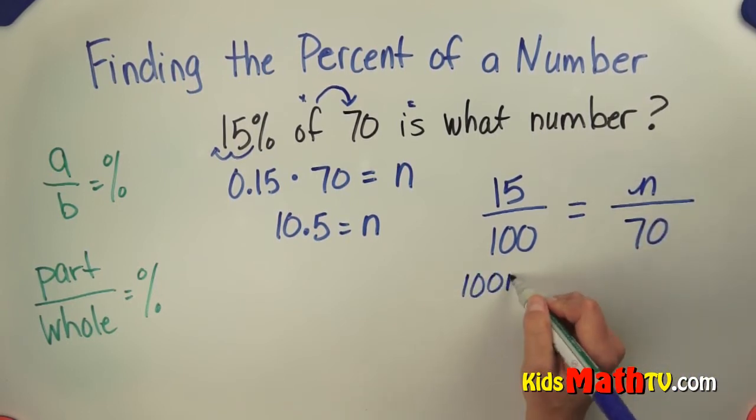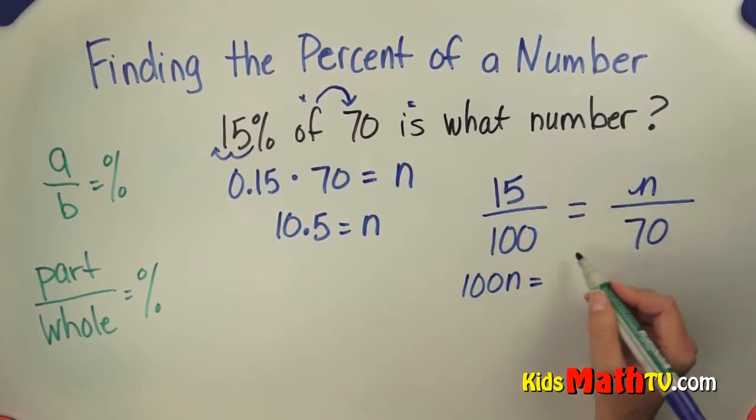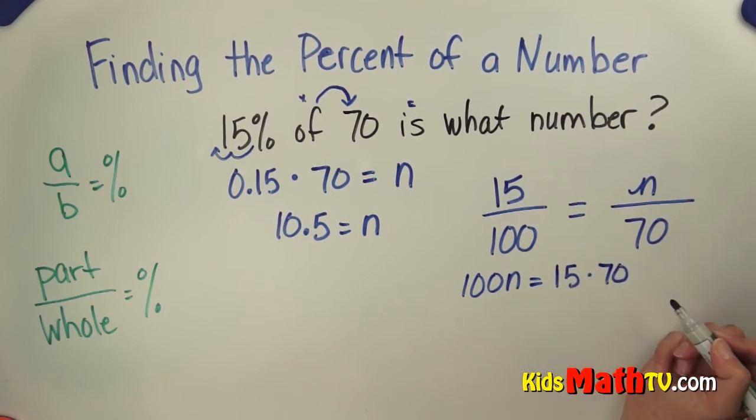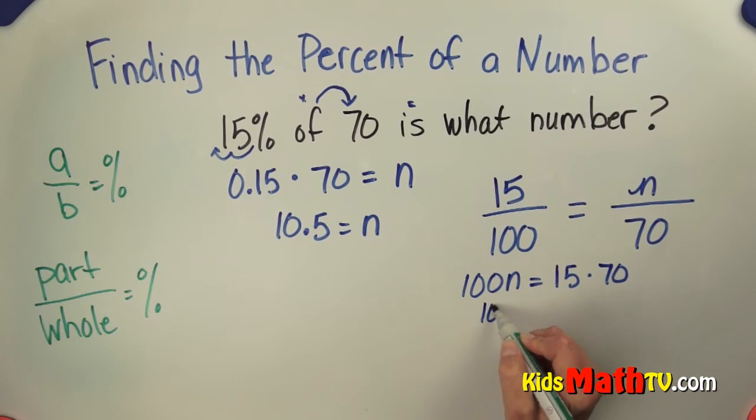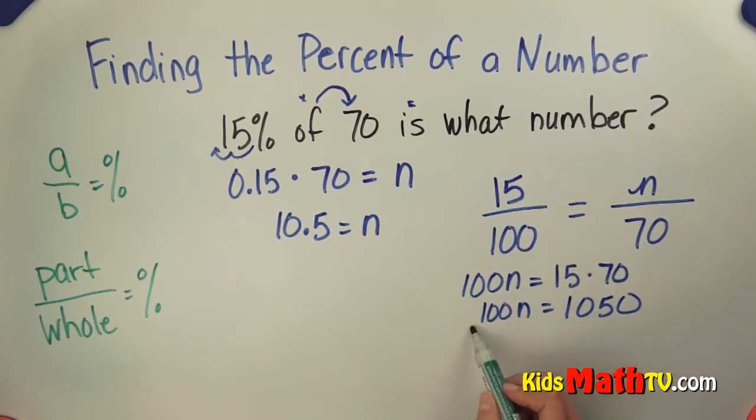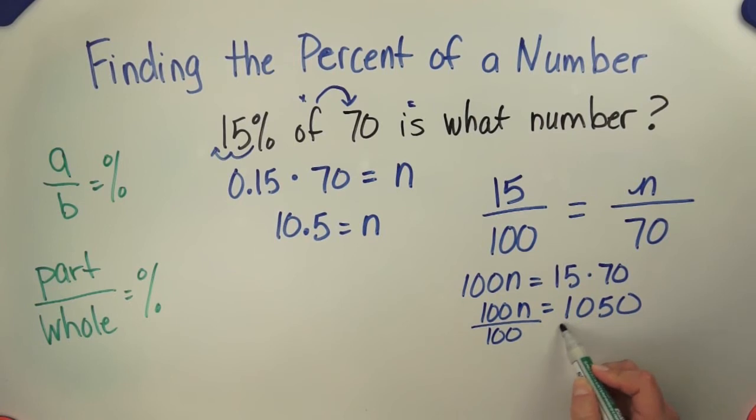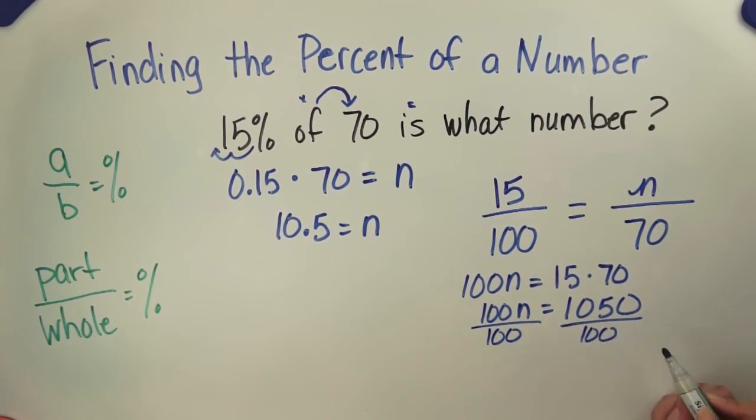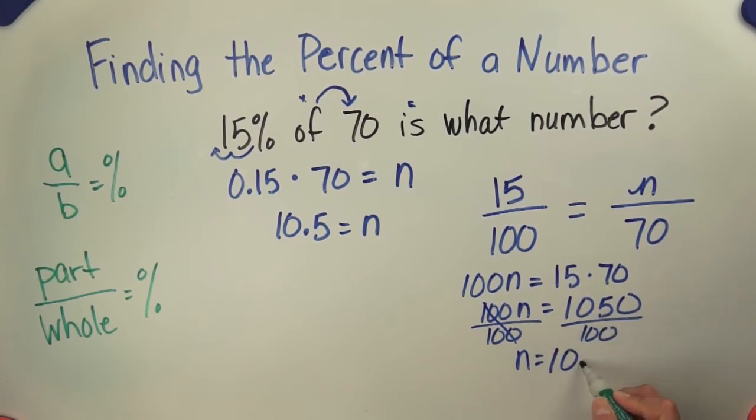We have 100 times n equals 15 times 70. And when we do that, we get 100 times n equals 1050. Now I'll isolate the variable. I will divide by 100 on both sides of the equation, and when I do that, I get n equals 10 and 5 tenths as well.